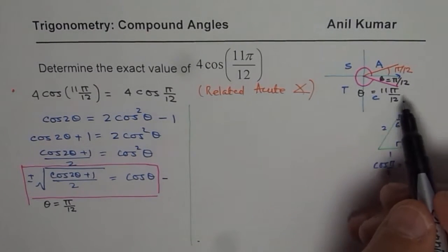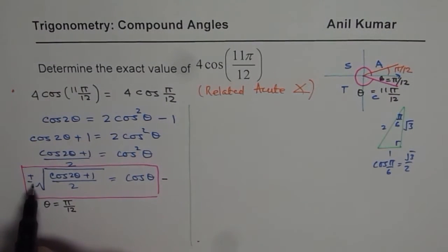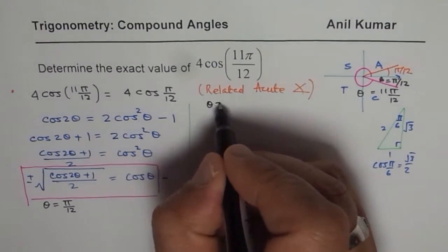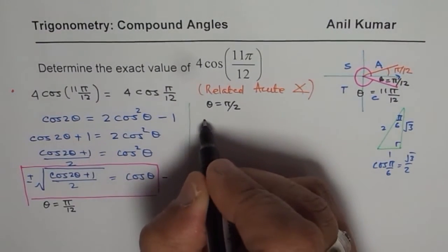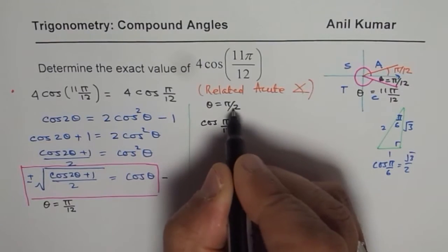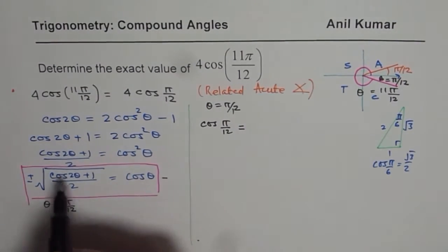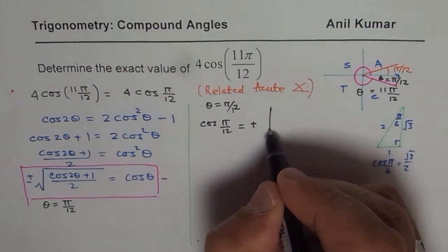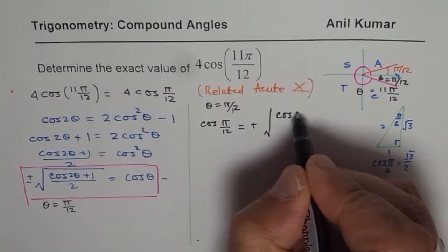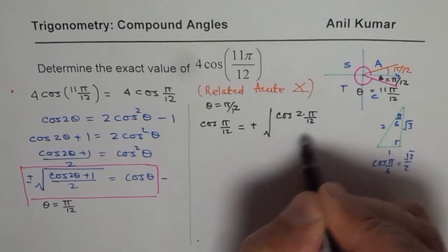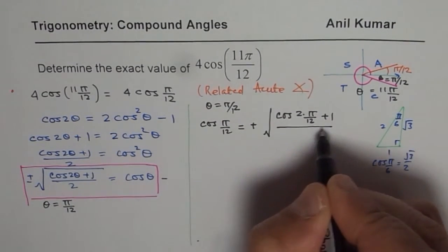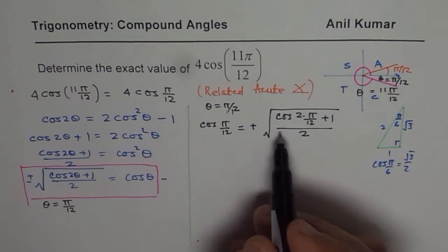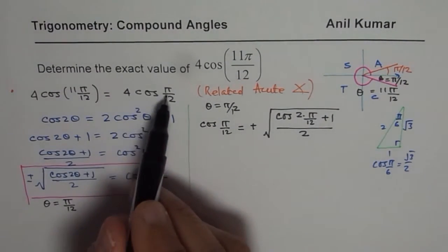Now, one thing is very clear. We are looking for a positive value. So we will write positive here. Let me take it to this side. So I am writing θ equals to π/12. In that case, cos of π/12 is equal to, so we will replace θ with π/12. And we are taking positive sign because we are in quadrant 4. Square root of cos of 2 times π/12 plus 1 divided by 2. What do we need? We need 4 times cos π/12.